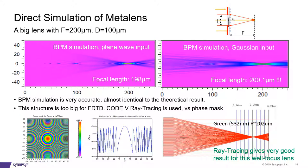From this point, a valid question would be, can this structure be simulated in a different way? It is definitely way too big for FDTD, but what about ray tracing in Code V, which is a different imaging lens design software also from Synopsys. So that's what we did. We ran a ray tracing simulation through the phase mask interface. The results show a focal length of 202 microns. In this example, ray tracing gives a very good result for this well-focused lens and it was actually more efficient.